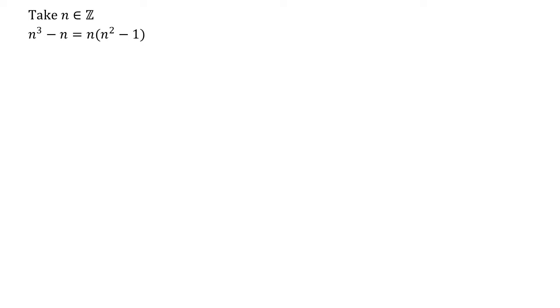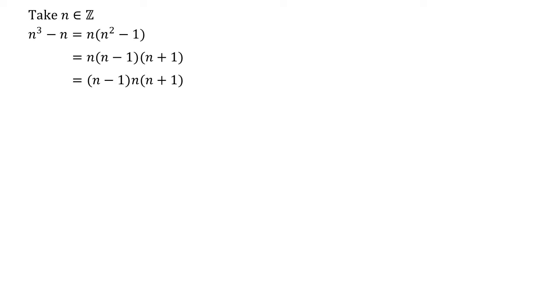We can then see that in the brackets we've got the difference of two squares — we've got n squared and 1 is obviously 1 squared. So let's split that up, as that's often a useful thing to do, and we get n times n minus 1 times n plus 1. Rearranging in order of size, we have n minus 1 times n times n plus 1.